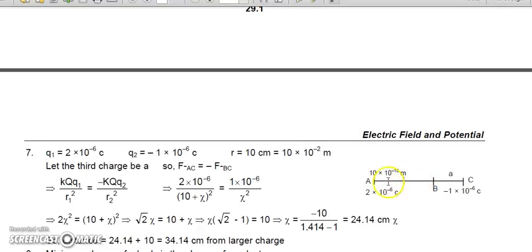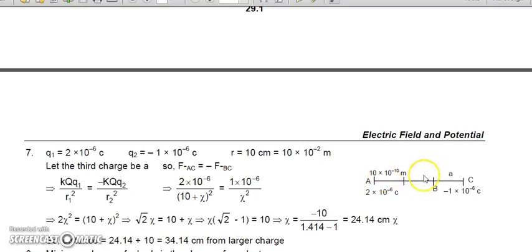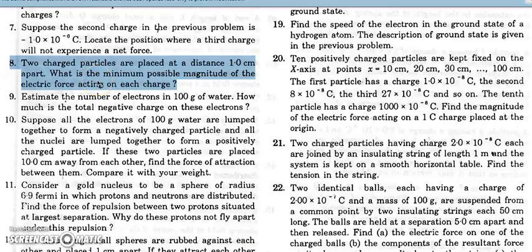The units cancel, so just equate the forces to get the value of x. Important point: if the charges are of the same polarity, the third charge should be placed in between. If the charges are of opposite polarity, the third charge should be placed on one side of both charges, nearer to the smaller charge.